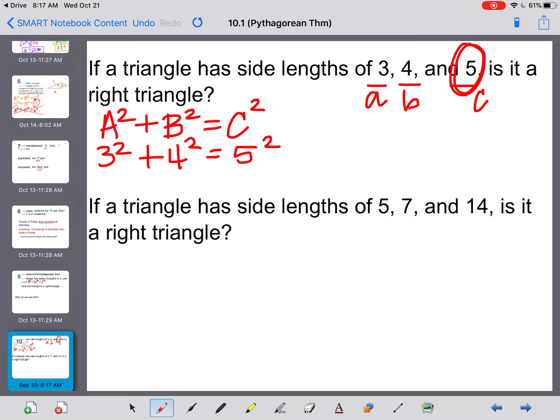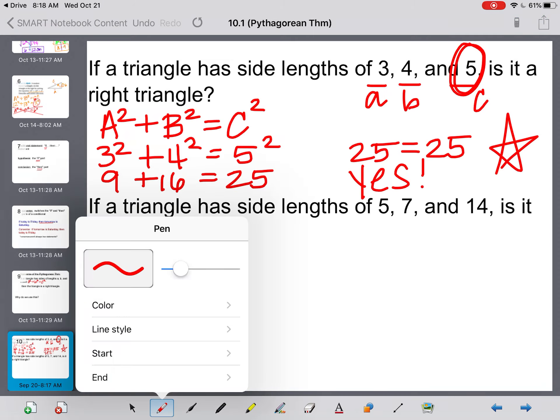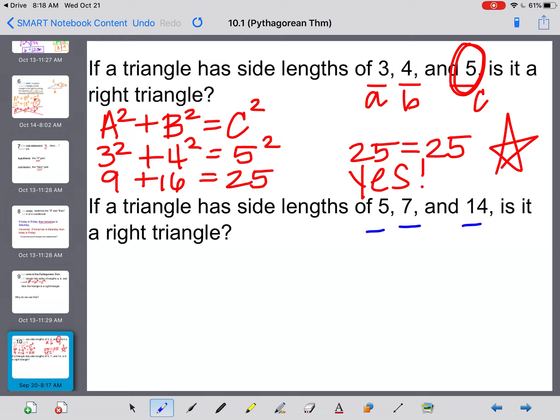So if I did 3 squared plus 4 squared equals 5 squared, we need to see if that's true or false. 9 plus 16 equals 25. What is 9 plus 16? It is 25. So if I get an answer that is true, 25 equals 25, then yes, this is a right triangle.